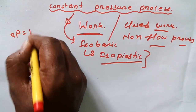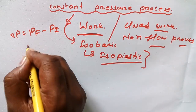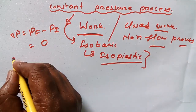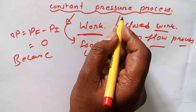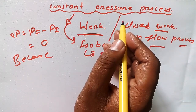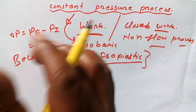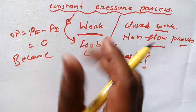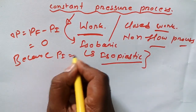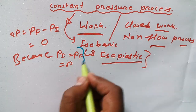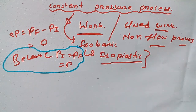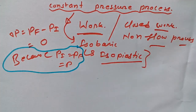You have probably studied that ΔP equals P_final minus P_initial equals zero, because in the case of a constant pressure process, the pressure does not change from one state to another. That means P_initial equals P_final equals P.